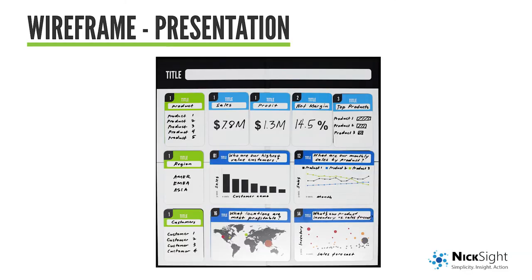Jumping into the wireframe, I'm using the dashboard wireframe kit to quickly put together the visual. This is a distillation of all the previous steps: interviews, personas, crafting questions for those personas, and then breaking them down into what you see here. We've got our KPIs at the top in light blue — sales at 7.8 million, profit of 1.3 million, net margin of 14.5%. We're showing our top products, which came out of the interviews — seeing that we really need to see how those top three products are stacking up.